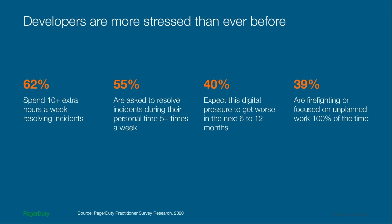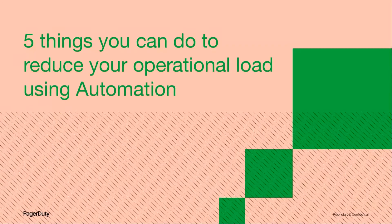Every company is really facing this challenge of accelerated digital demand. This data also points to the human cost of the shift — there's a significant strain on practitioners charged with keeping digital services running. When there is too much operational load, the obvious answer is to invest in resiliency, but there are complementary investments you can make — easy things you can do to offload your team and reduce or mitigate toil. I'm going to talk about the five things you can do to reduce your operational load using automation.